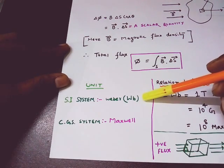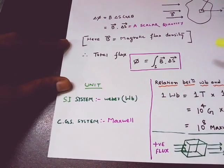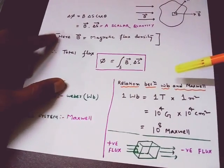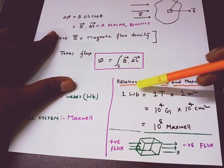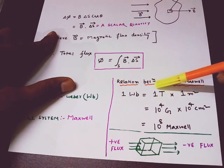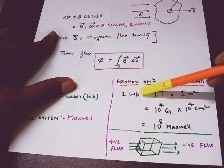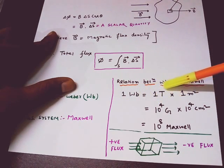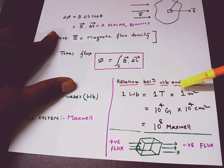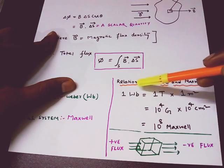Now we come to the unit. The flux has a unit; in the SI system it is Weber, and in the CGS system it is Maxwell. One Weber is equal to one Tesla into one meter square. So the total outward flux will be one Weber when the magnetic field is one Tesla and the magnetic field lines are passing perpendicular to a surface having area one meter square — that is unit area. This is the definition of one Weber.